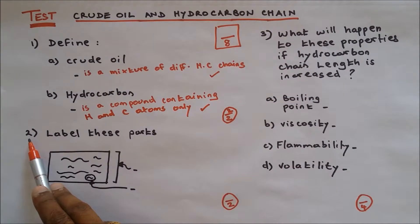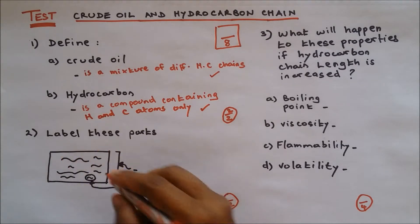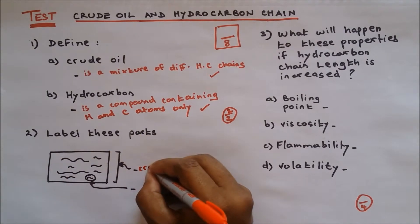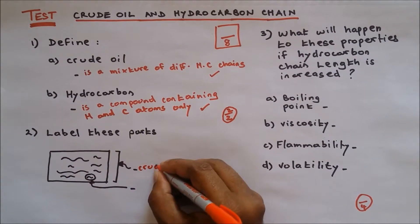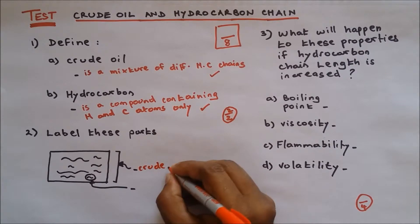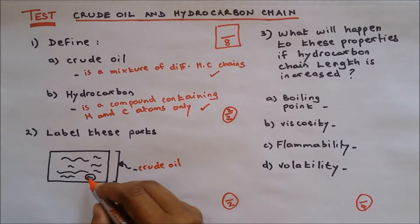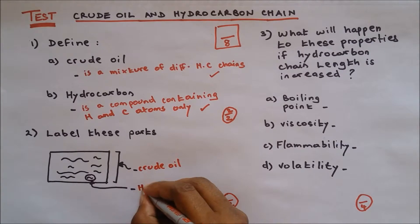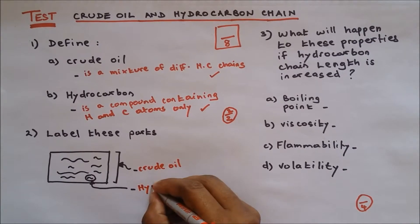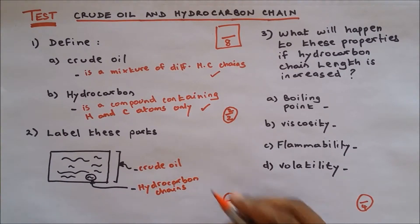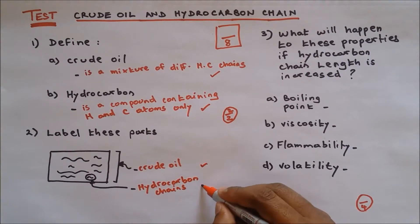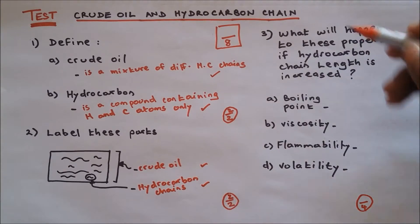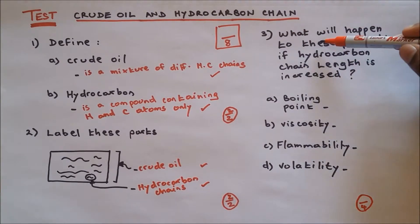Question number two: label the diagram. This box represents crude oil, and inside the crude oil we have hydrocarbon chains. Two points here, so two out of two.